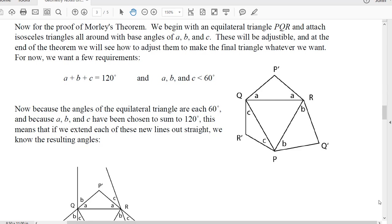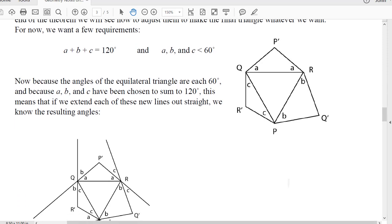And we add on all three of the sides isosceles triangles. An isosceles triangle P'QR where these two angles are A, and PQR' with these two angles are C, and PRQ' where these two angles are B. We have to choose A, B, and C carefully. They have to add up to 120 degrees and none of them can be more than 60 degrees. They're adjustable and what we can do is we can adjust them to make any triangle whatsoever and that's how we're going to prove the theorem.